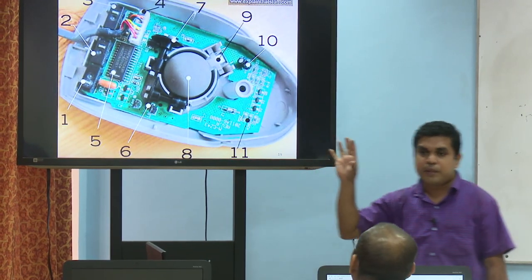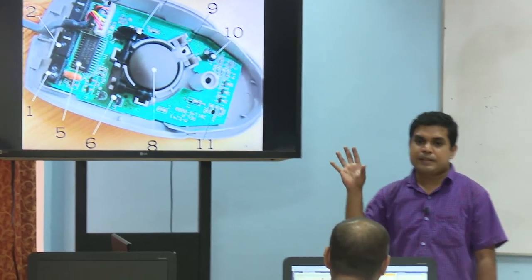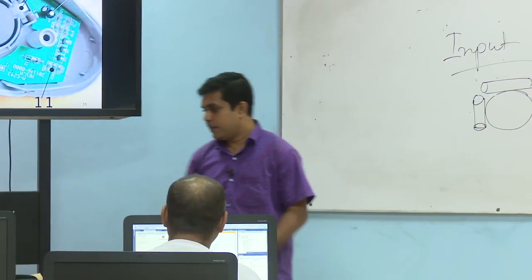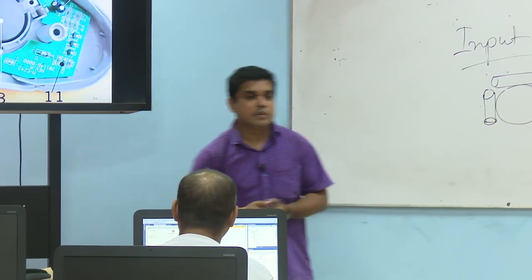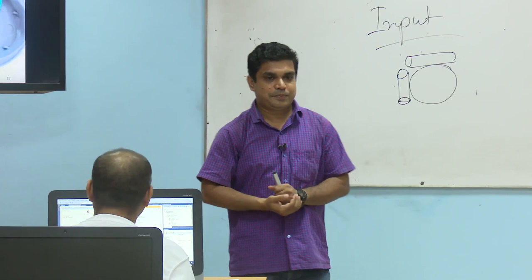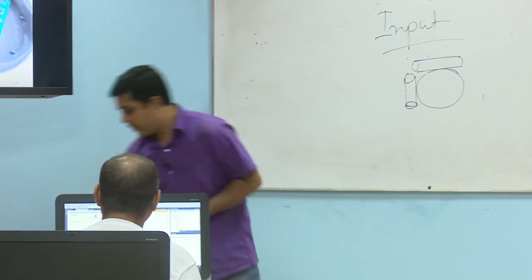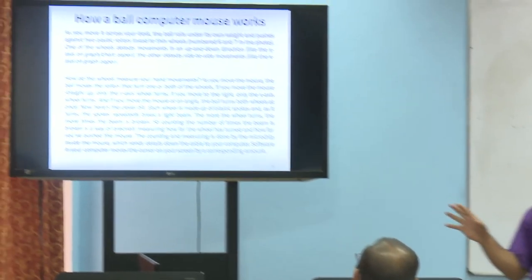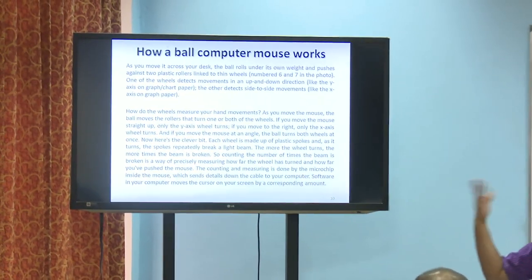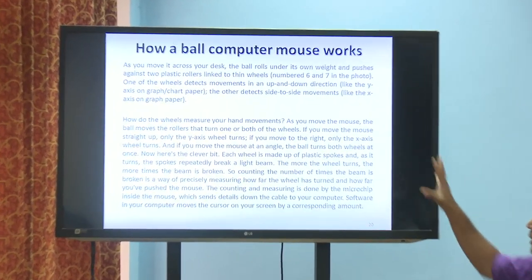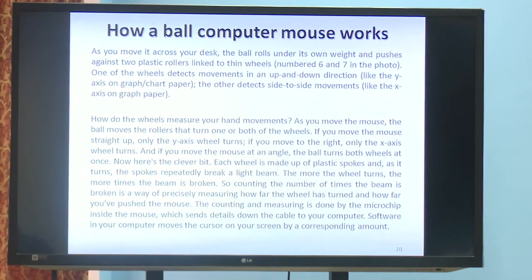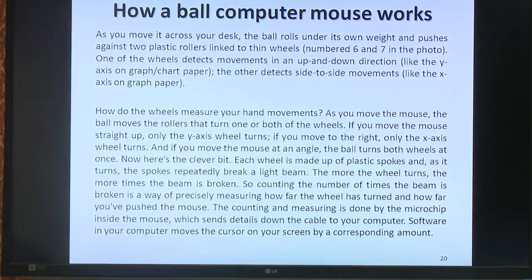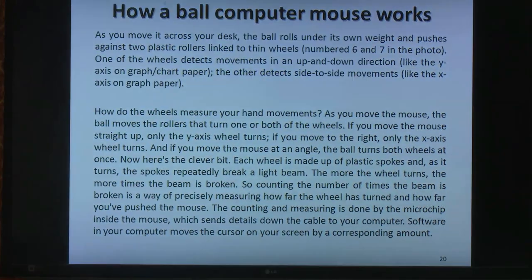Overall, this is the structure of a ball mouse — also called a roll mouse. How does it work? As you move it across your desk, the ball rolls.